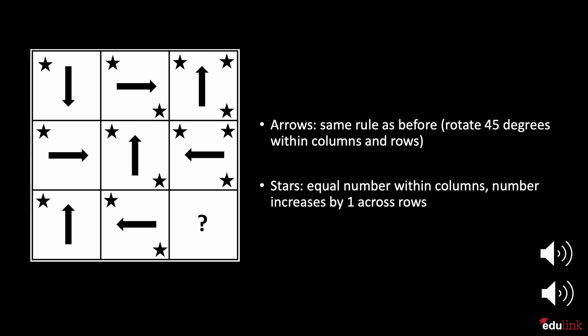In this example, we added a second element, amount. To solve this pattern, we need to analyze both the patterns of the arrows, as well as the amount of stars. We can further divide this pattern into rows and columns. Let's start with the arrows.